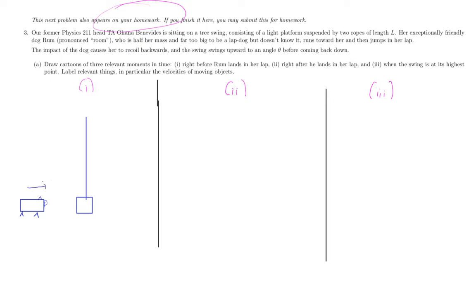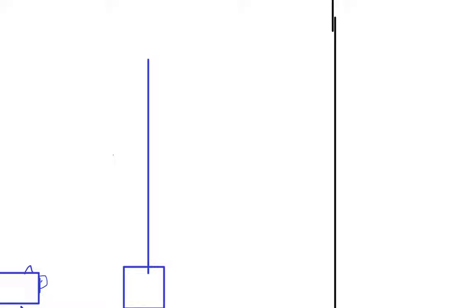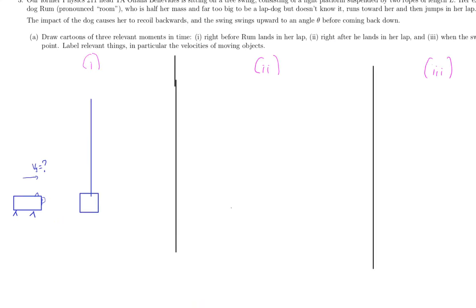So, Room the Dog is initially moving at some speed v1. And I don't know what it is. So initially, he's moving forward at some speed v1. And we don't know what that is. We'll find it later in the problem.